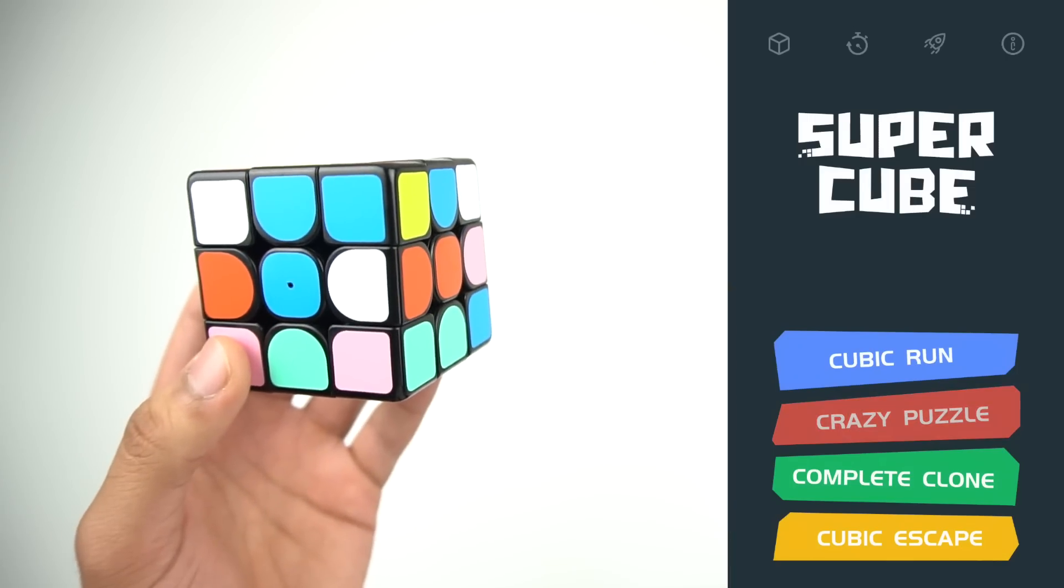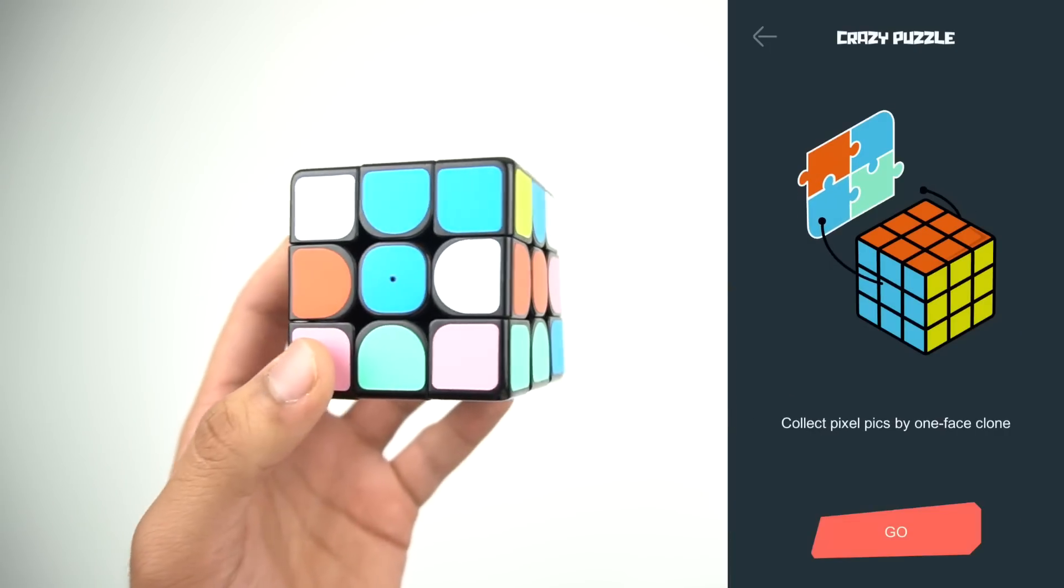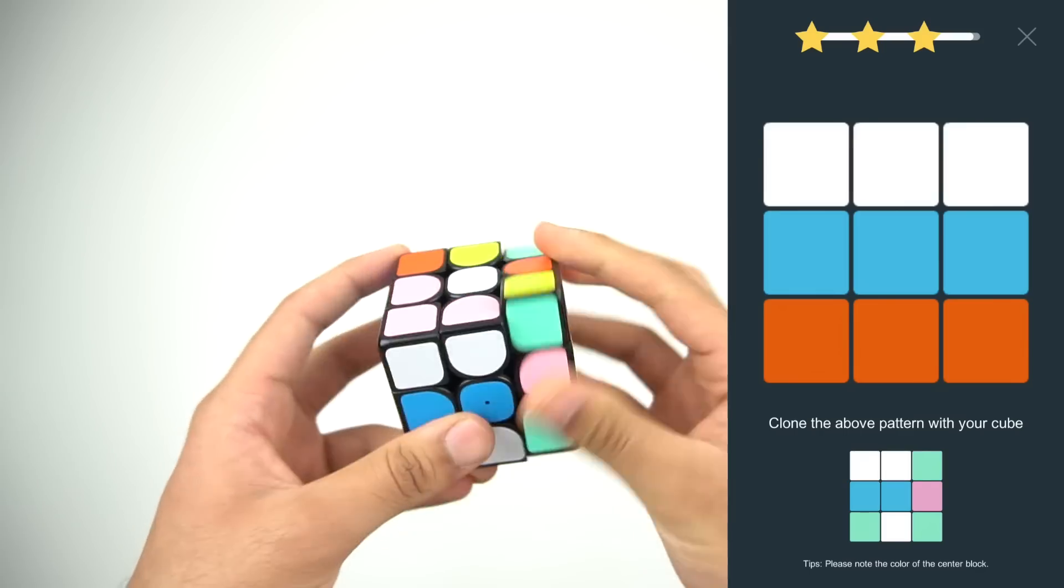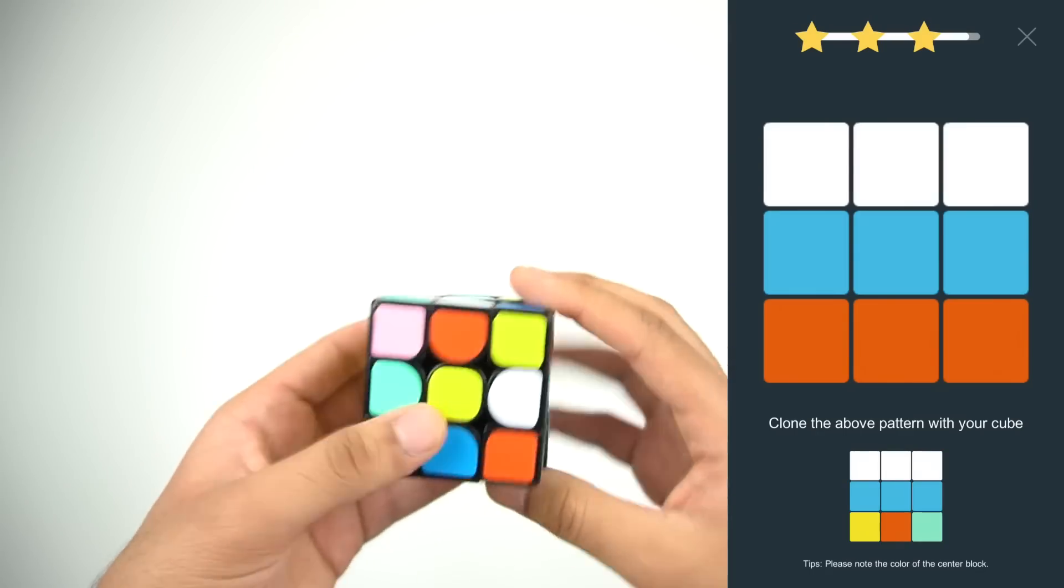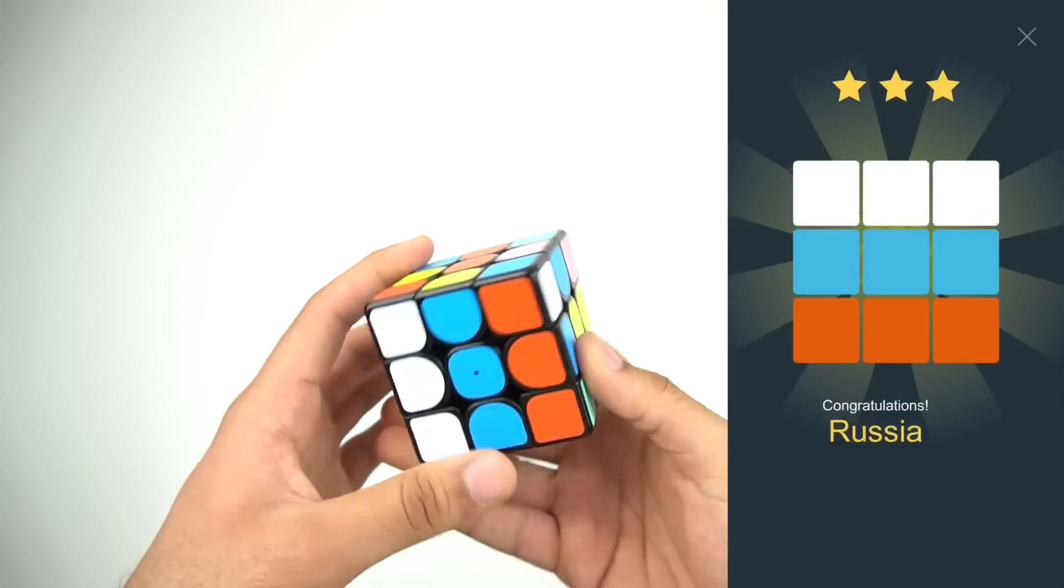Next, let's take a look at Crazy Puzzle. This one's alright as well, but I did get a little bored of it after a while. Basically, you have to match the image in the game on your cube to complete the level, and once you complete it, it tells you what the image was.